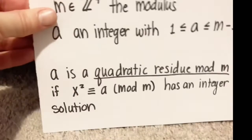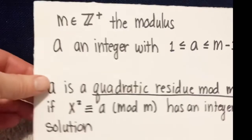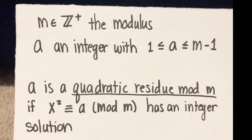The setup that we had in the past with quadratic reciprocity was that we had a modulus m, and then we had an integer a between 1 and m minus 1, and we defined a to be a quadratic residue mod m if there was a solution to x squared congruent to a mod m.